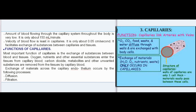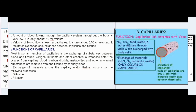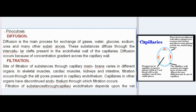Diffusion: Diffusion is the main process for exchange of gases, water, glucose, sodium, urea, and many other substances. These substances diffuse through the intercellular clefts present in the endothelial wall of the capillaries. Diffusion occurs because of the concentration gradient across the capillary wall.